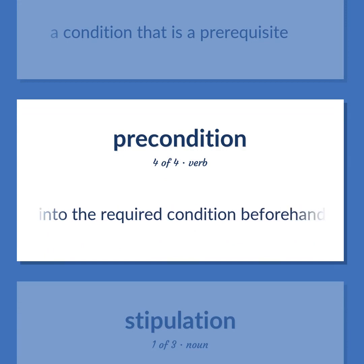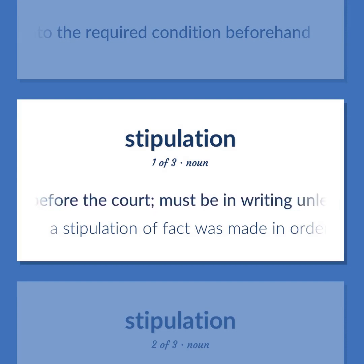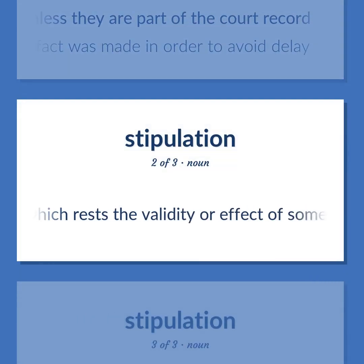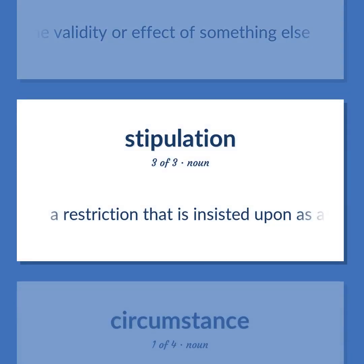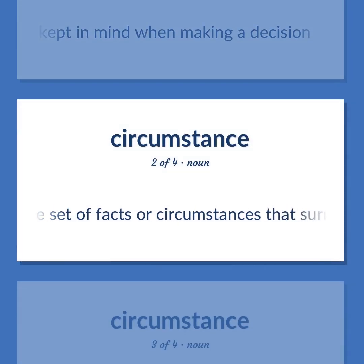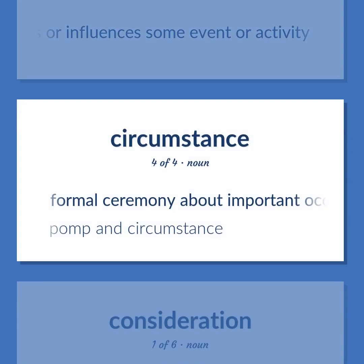Condition/Stipulation: a condition that is a prerequisite. Put into the required condition beforehand. Law: an agreement or concession made by parties in a judicial proceeding, or by their attorneys, relating to the business before the court — must be in writing unless part of the court record — 'A stipulation of fact was made in order to avoid delay.' An assumption on which rests the validity or effect of something else. A restriction that is insisted upon as a condition for an agreement. Circumstance: the set of facts or circumstances that surround a situation or event. A condition that accompanies or influences some event or activity. Formal ceremony about important occasions — 'Pomp and circumstance.'